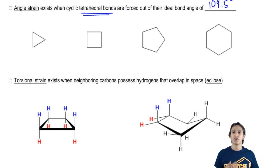Remember that tetrahedrals always want to have 109.5. The smaller your rings get, the more difficult it is for those carbon-carbon bonds to maintain that kind of bonding.